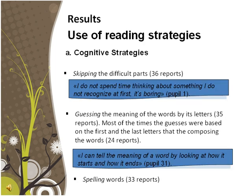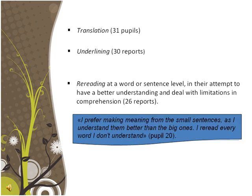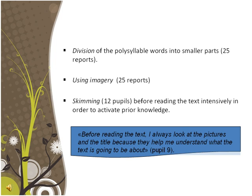Concerning the cognitive strategies identified, pupils seemed to adopt certain strategies in almost every difficult situation. Skipping difficult parts was a strategy bilinguals adapted for whatever they did not understand. Another favorable strategy was guessing the meaning of words by their letters. In word-level difficulties, spelling words was a strategy employed by many pupils. 31 pupils were involved in translation of difficult parts into their mother tongue, 30 underlined unknown words, whereas 26 often consciously repeated reading at a word or sentence level. Division of polysyllabic words into smaller parts and imagery were also fairly used. One third of the pupils mentioned skimming the text before reading it intensively in order to activate their prior knowledge.